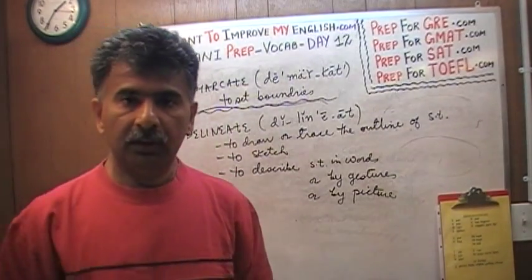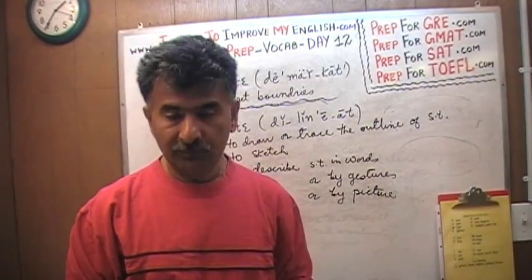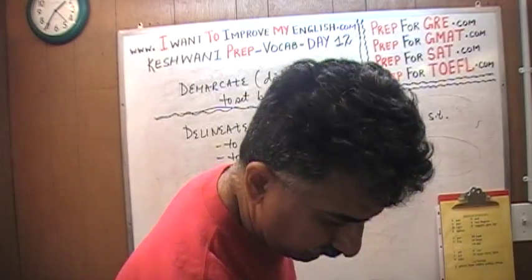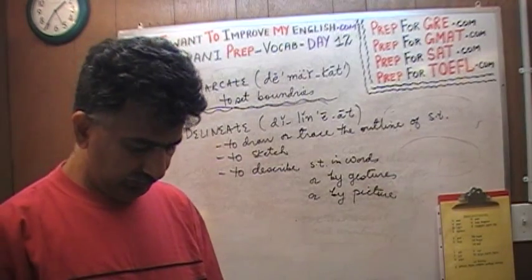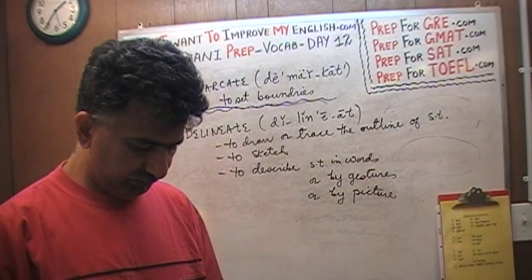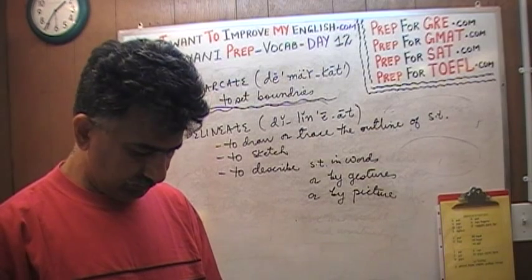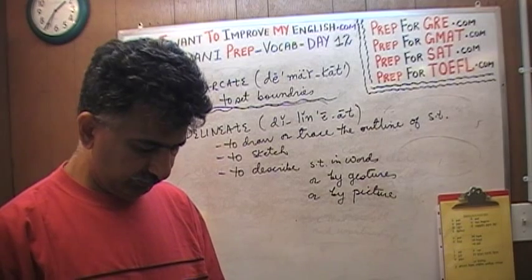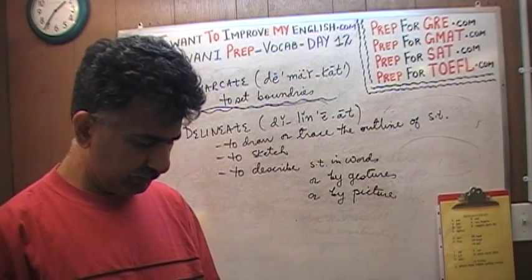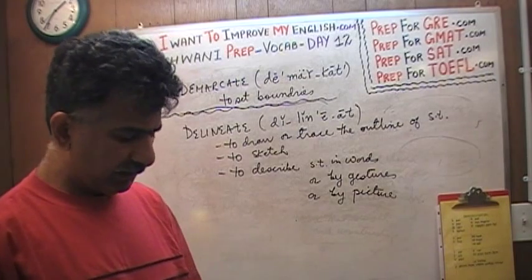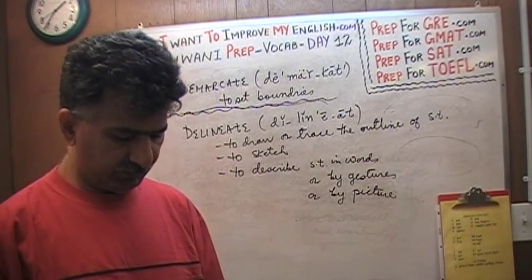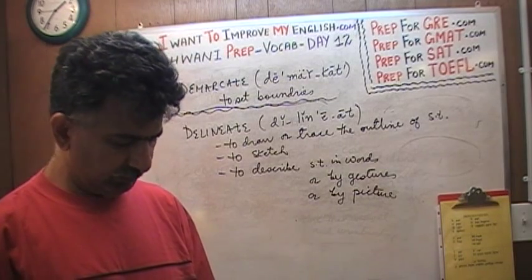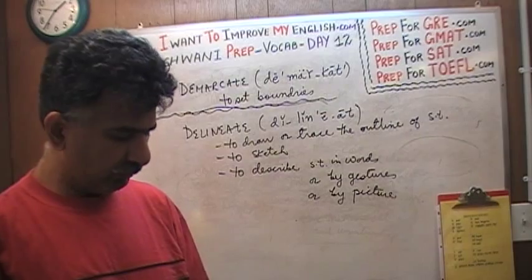Sometimes two nations — two contiguous nations — have a demarcation dispute. 'Contiguous' is a good word that just came out of nowhere. I'm not quite sure about the spelling, so we'll look it up. Contiguous nations sometimes have a demarcation dispute because they do not agree on the boundaries of their countries, and they sometimes even go to war for that.